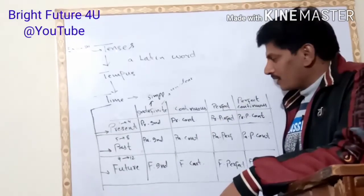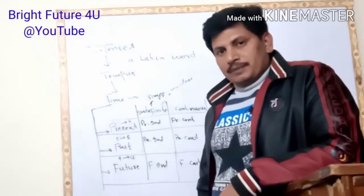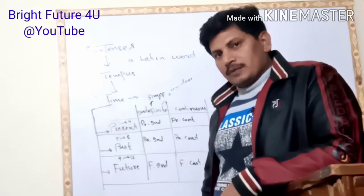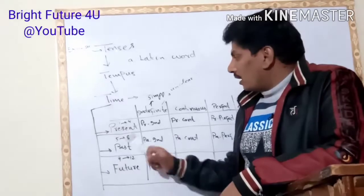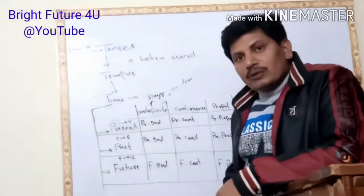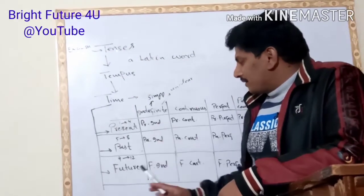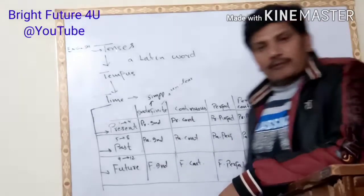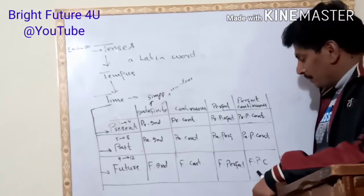Future tenses are numbers nine to twelve: future indefinite — also called future simple — future continuous, future perfect, and future perfect continuous. These last two words are the abbreviation for future perfect continuous.